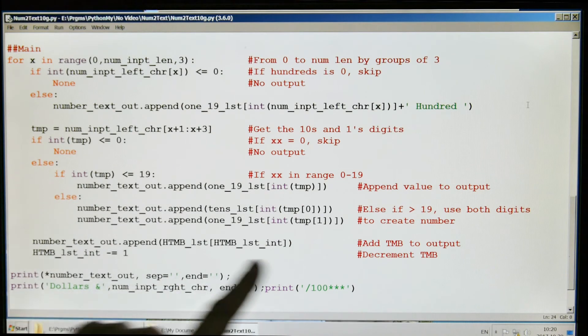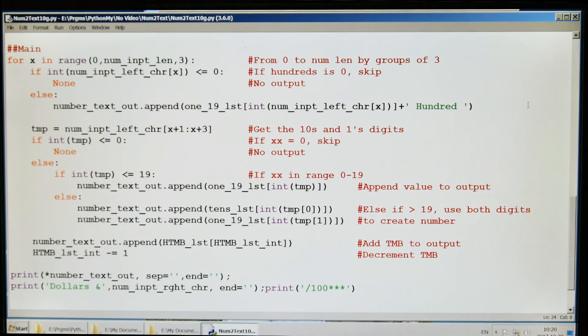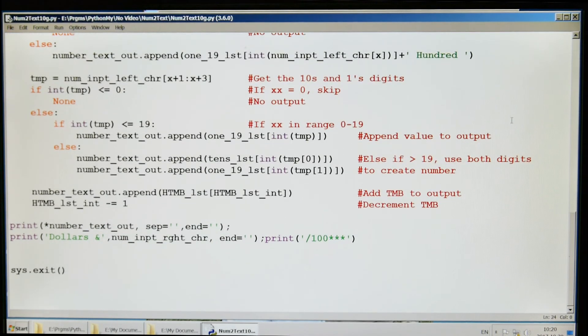And then here we're going to add the thousand, million, billions to the output, and then we're going to decrement thousand, million, billion as we move across the number. And then we print it out and we exit.